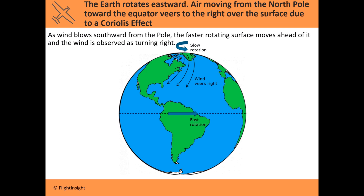The Earth rotates to the east. If you stare at the top of the planet — staring directly at the North Pole — you'll see counterclockwise rotation. To put it another way, it's rotating to the east. This is why the sun rises in the east and sets in the west instead of the other way around.